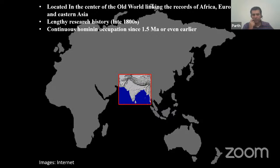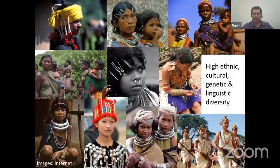India is important because the subcontinent is located at the center of the Old World, linking Africa, Europe, and Eastern Asia. It has a lengthy research history in stone age studies from the late 1800s, roughly contemporary with stone tool discoveries in Europe. There is evidence of continuous human occupation from 1.5 million years onwards, possibly even earlier around 2 million years. The region also has very high ethnic, cultural, genetic, and linguistic diversity, with a vast number of tribal and hunter-gatherer populations adapted to different ecozones.